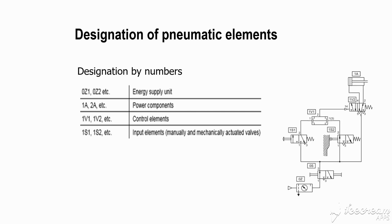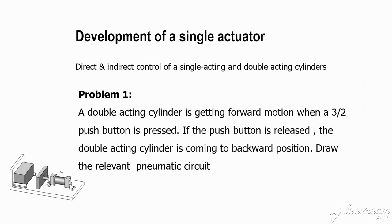Regarding component naming conventions: energy supply is labeled OZ1, OZ2 etc. Control elements (valves) are labeled 1V1, 2V1 etc. Input elements (switches) are labeled 1S1, 1S2 etc. Power components (actuators/cylinders) are labeled 1A, 2A etc. For example, 1S1 is switch 1 for cylinder 1, and 1V1 is valve 1 for cylinder 1.